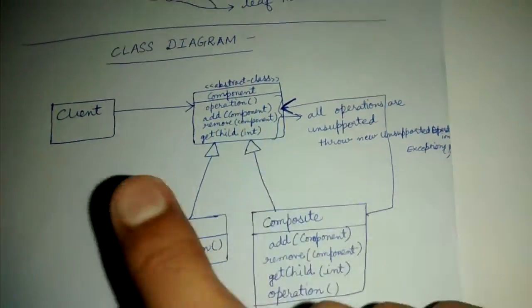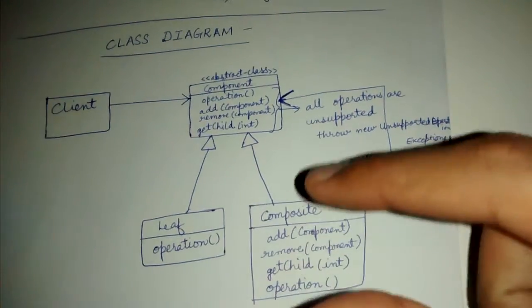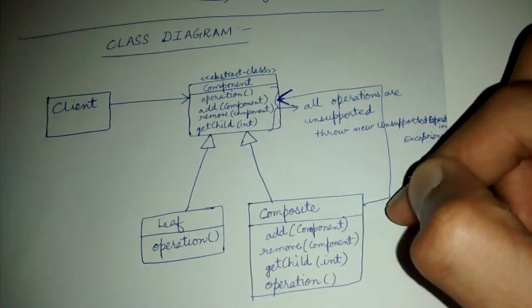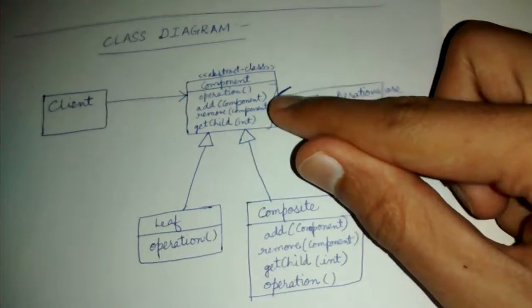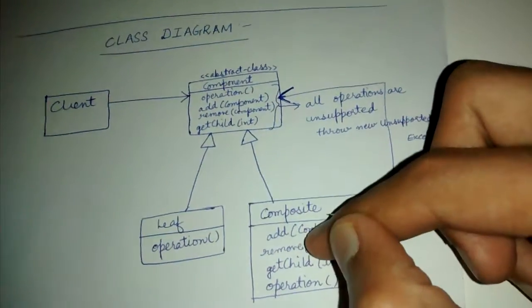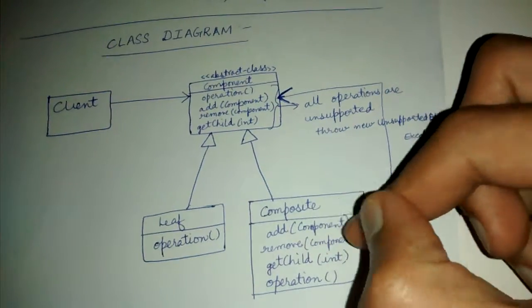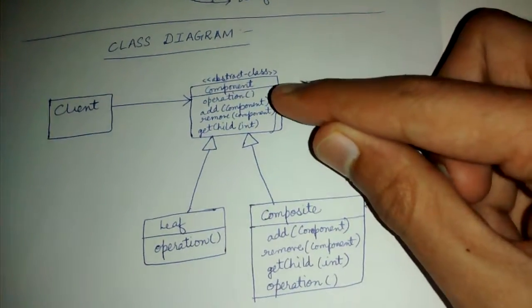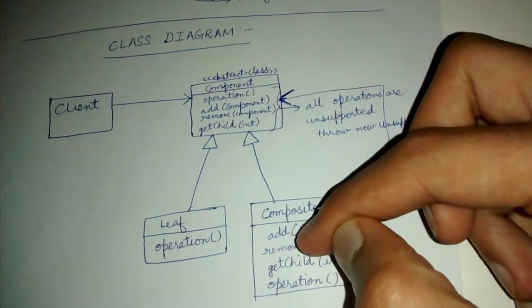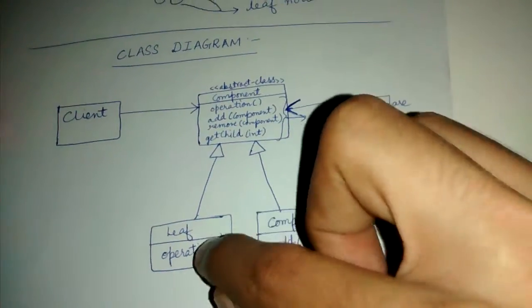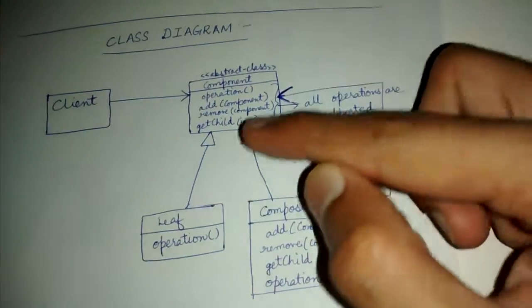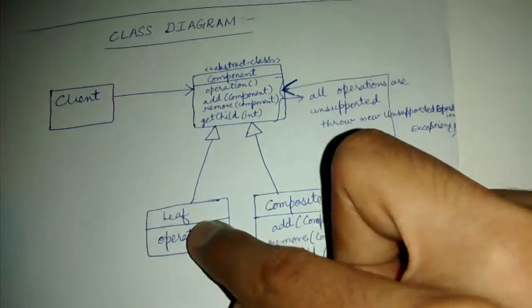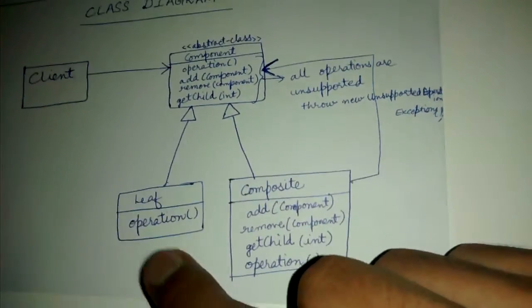Client interacts with both leaf and composite through the component interface, so it looks at both as a component. The difference is that a composite can contain one or more components — those components can be composite again, or the recursion can end and they can be a leaf. We can recurse as long as we want, ending when we reach a leaf.